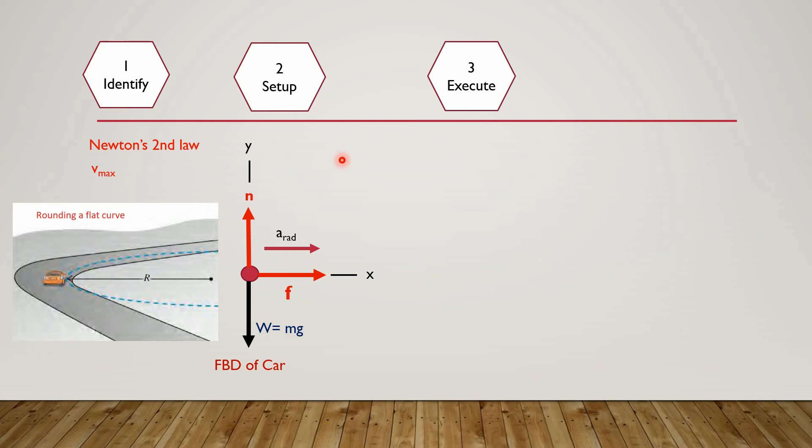First step is to execute the problem, and we will apply Newton's second law of motion: sigma Fx equals m a radial. There is a single force acting along the x-axis, that is the frictional force f. This net force is producing the radial acceleration in the car. Sigma f equals f equals m a radial. The equation of radial acceleration is v squared over R, so f equals m v squared over R. If the velocity becomes maximum, then frictional force will also become maximum.